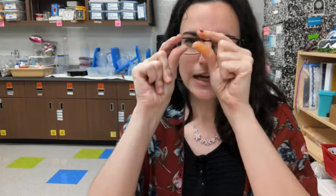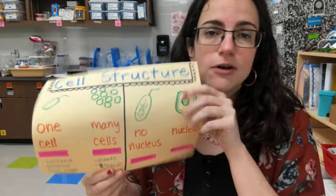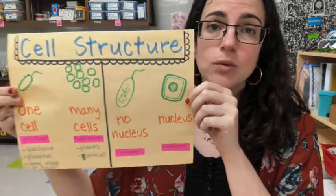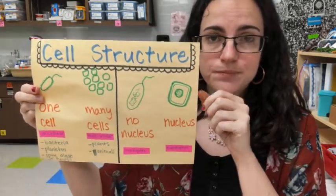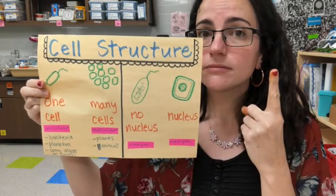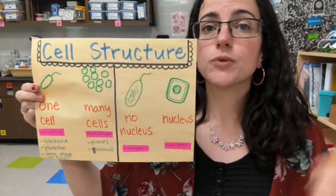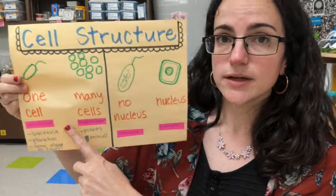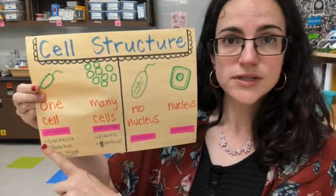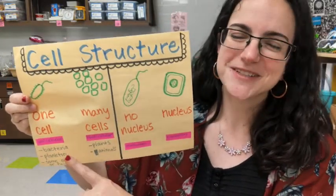What I mean by structure is let's get to the tiniest part of that living organism, and that is the cell. How is that cell structured or made within that living organism? Is there only one cell or are there two or more cells? And depending on how many there are, we would call that unicellular or multicellular.